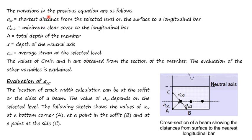The notations for Equation 1 are as follows. a_cr is the shortest distance from the selected level on the surface to the longitudinal bar. c_min is the minimum clear cover to the longitudinal bar — the distance between the bar surface and the external surface of the member. H is the total depth of the member, and X is the depth of the neutral axis.